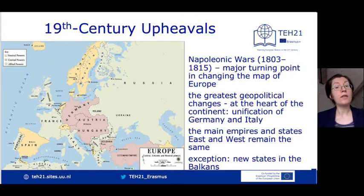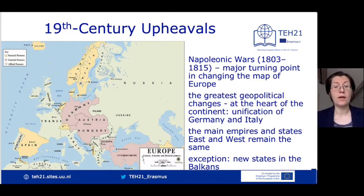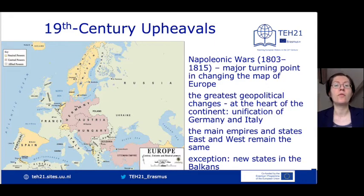Going in the opposite direction, the south east of the continent saw the formation of new states in the Balkans, for instance, on the fringes of the Ottoman Empire.